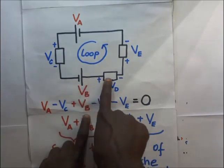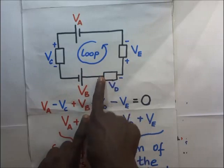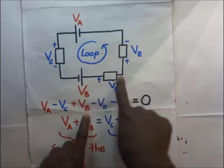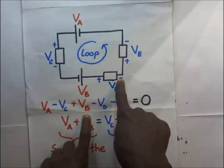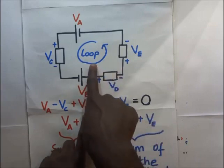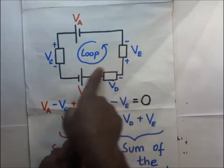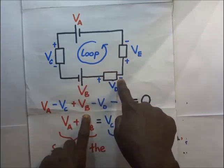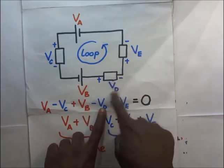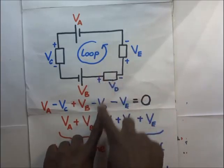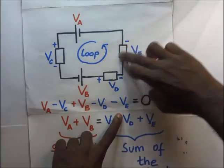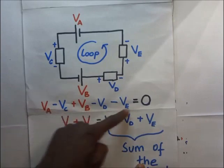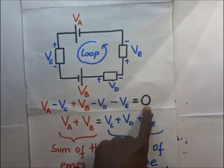As we continue moving, the current is entering from one side — making that the point of higher potential — and the point of exit is the point of lower potential. The loop is moving in that same direction, so the current through this resistor is experiencing a voltage drop, making the voltage across it a negative. The same applies to VE. The total sum of all the potentials in this loop is equal to zero.